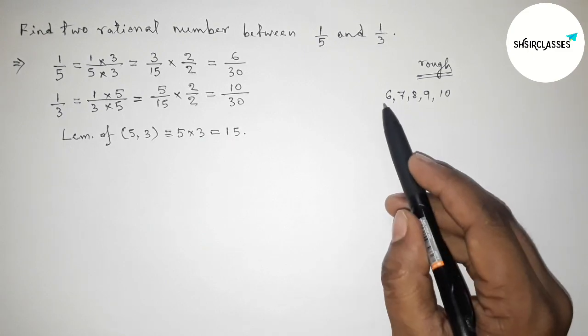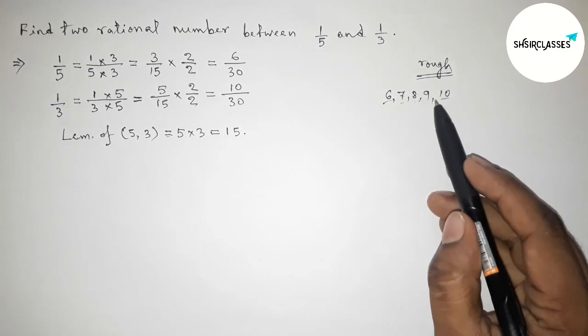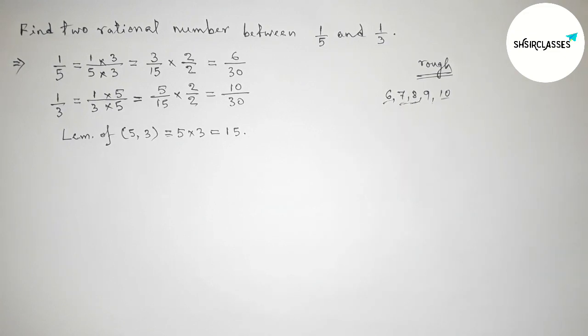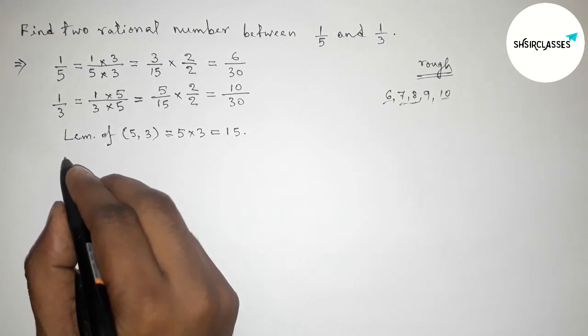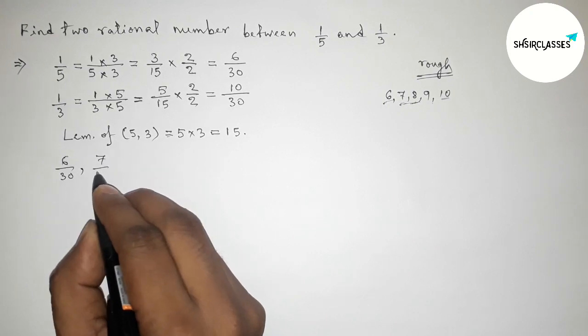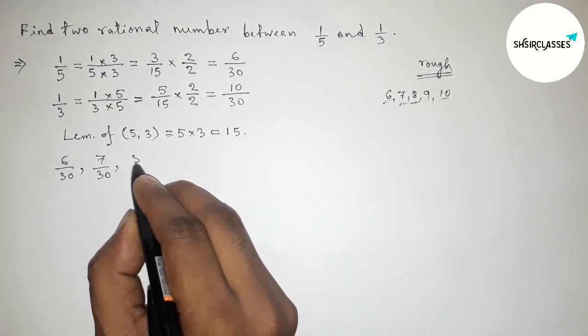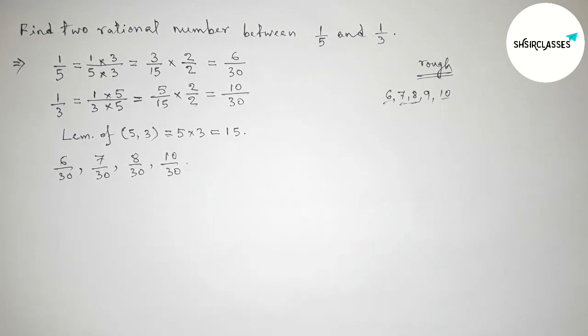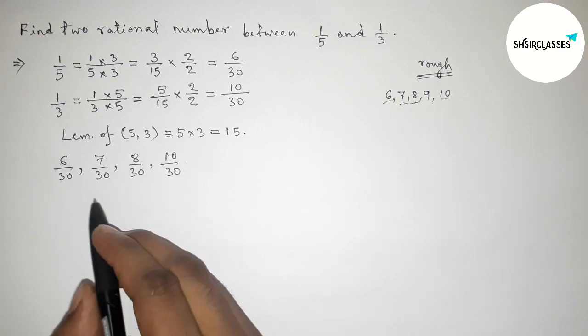Between 6 and 10 we can get three integers, but we have to take only two integers. Taking two integers and making all the rational numbers, we write 6 by 30, then 7 by 30, then 8 by 30, then 9 by 30, then 10 by 30.